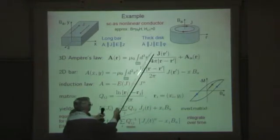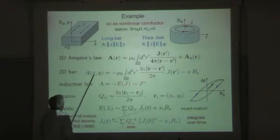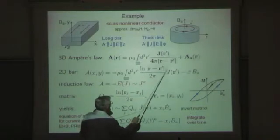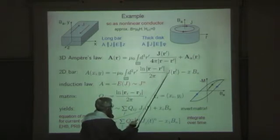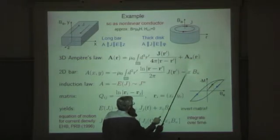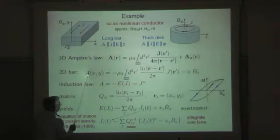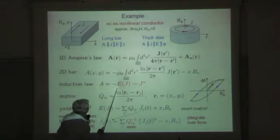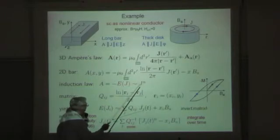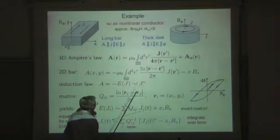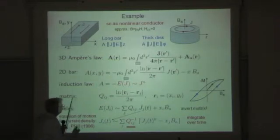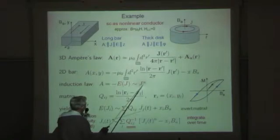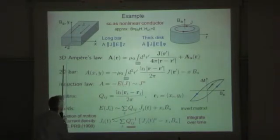This is the applied vector potential from the applied field. And now you integrate either along this z-coordinate or along the angle. Because of symmetry, you can integrate. And then for the two-dimensional bar, you get now this expression. So the vector potential is given by some non-local kernel, logarithmic function, times the current density, minus this vector potential of the applied current. And now you take the time derivative here and use the induction law, which means the time derivative of the vector potential is just the electric field. And the electric field, according to some model, is proportional to the current density to the nth power. This is a very realistic model. And when n is large, then you are close to the Bean model. And when n is smaller, you have strong flux creep, or strong thermally activated pinning.